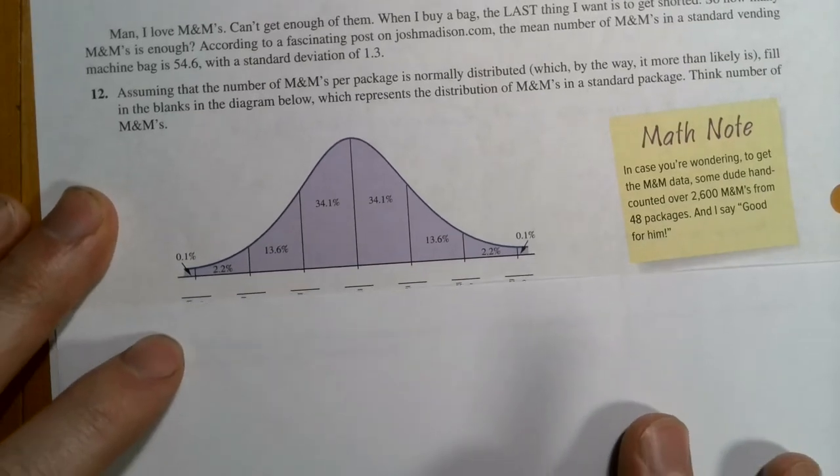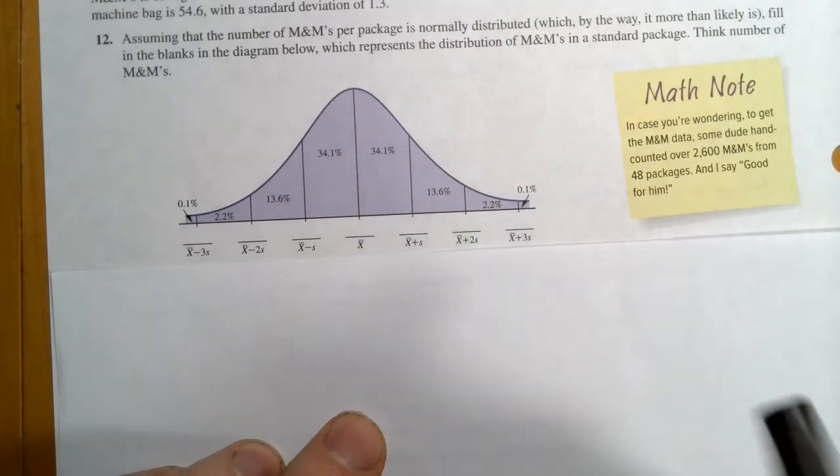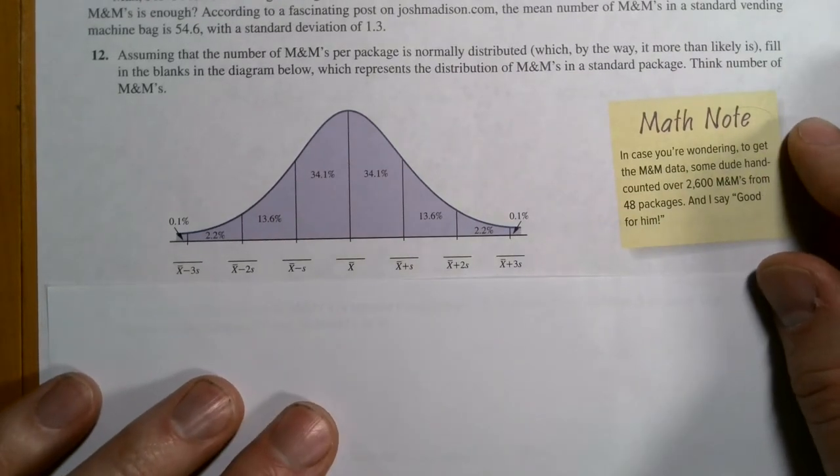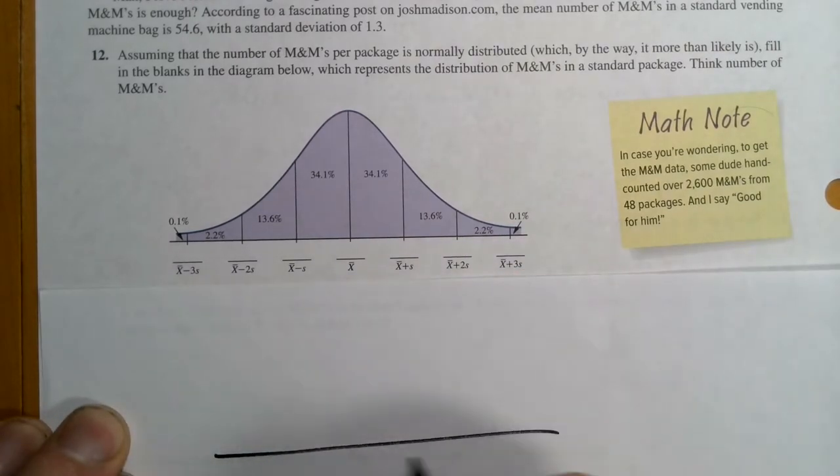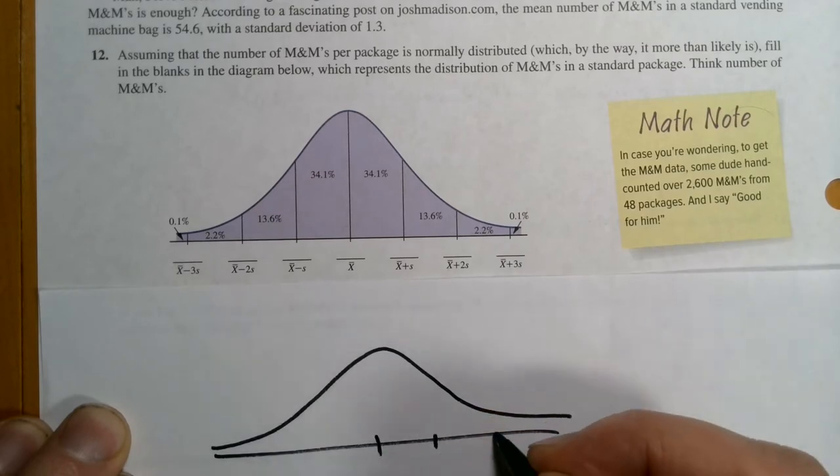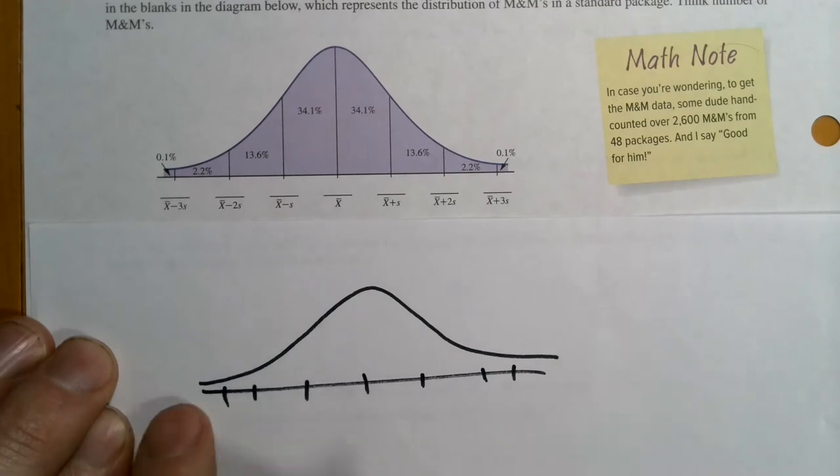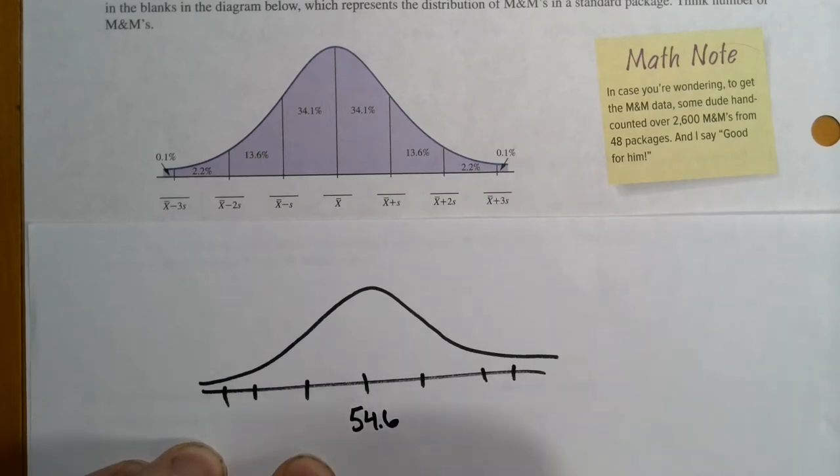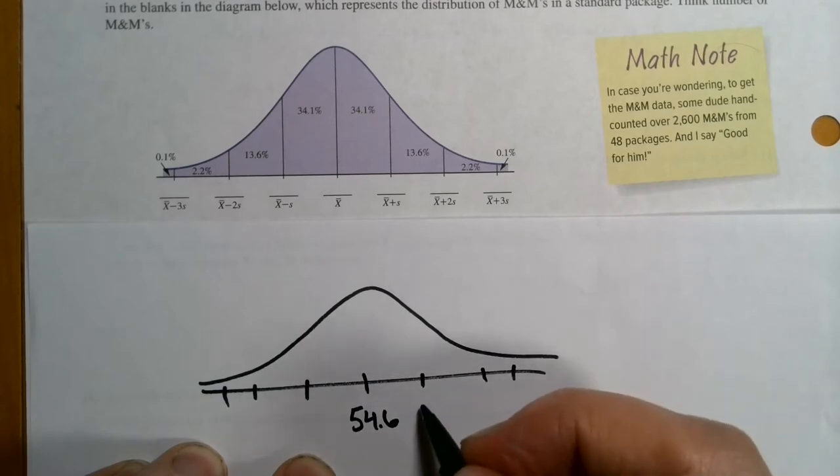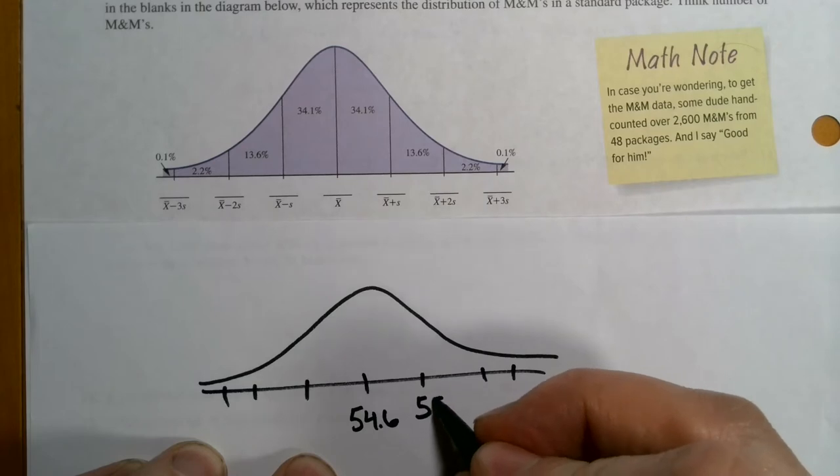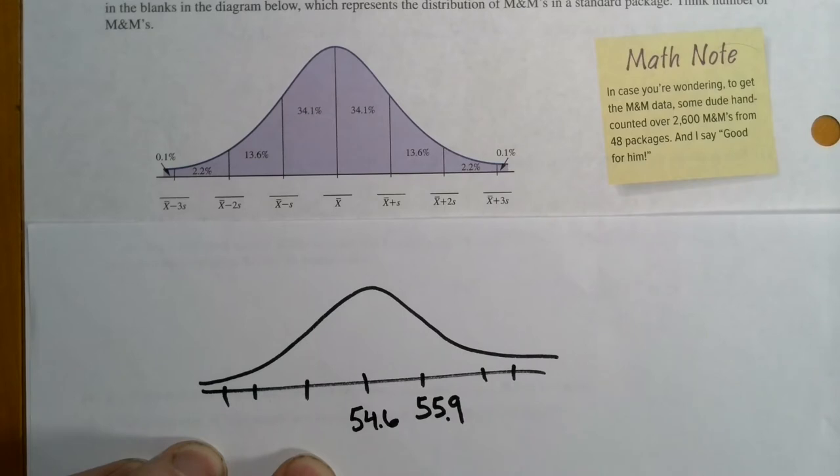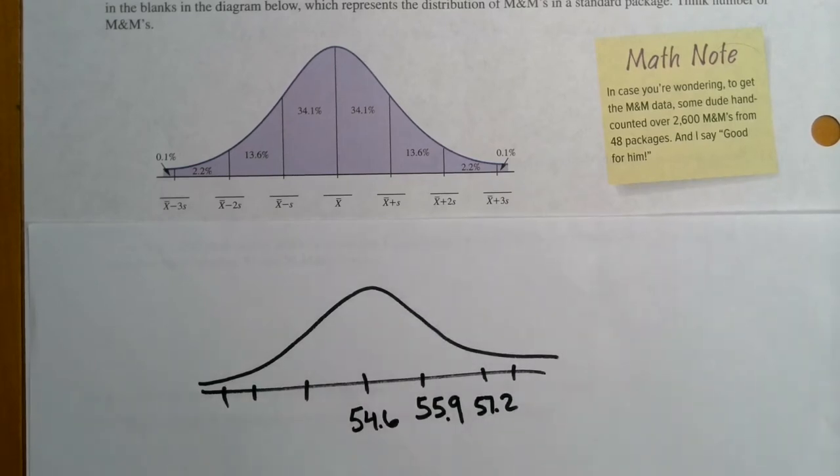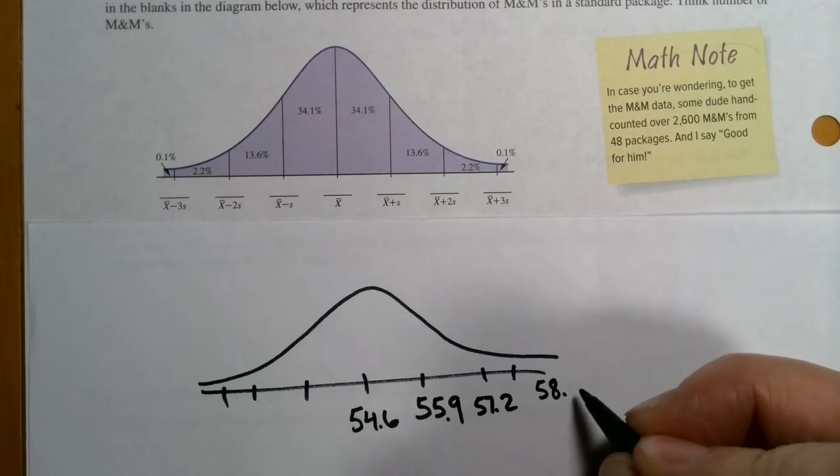So we're going to fill in the blanks below with our values. Well, we know that the center is the mean. And he actually has that listed for us as X bar. Now, if we believe that this 54.6 is the mean for all M&Ms, we would actually probably write that as mu instead of X bar. I'm going to copy this graph because I don't like writing in the book. And then we do one, two, three. Perfect distance apart. So we got 54.6. That's our mean. What we would then do is take 54.6 and add to it 1.3. And that becomes the number right here. So that would be in this case, 55.9. We would then add 1.3 to this number to get the next tick mark.